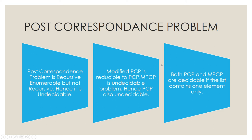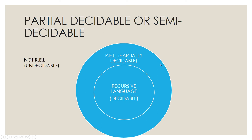Regarding partial decidability: a language is said to be partially decidable if it is a recursively enumerable language but not a recursive language. Recursive languages are known as decidable languages, while non-recursively-enumerable languages are undecidable languages. This is really important and may come in exams — you must be familiar with the partial decidability terminology.